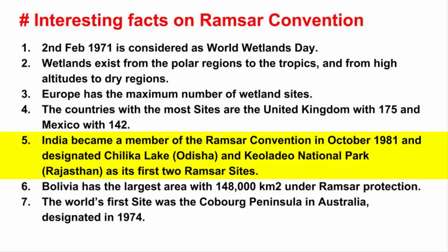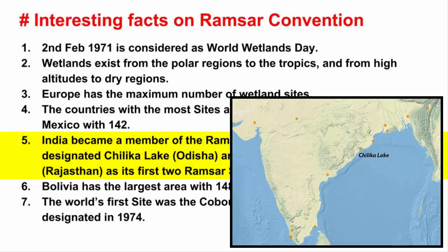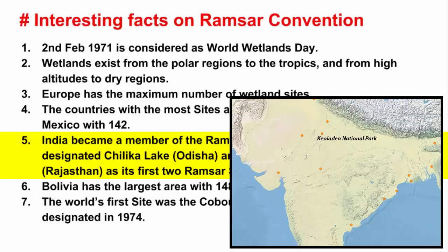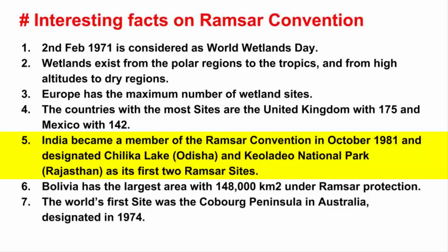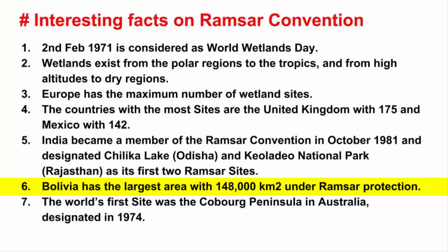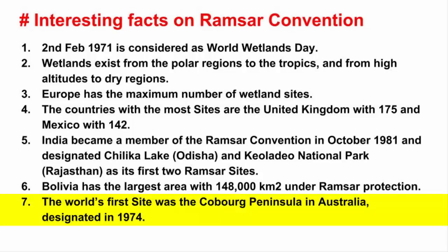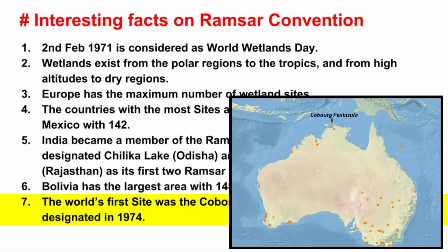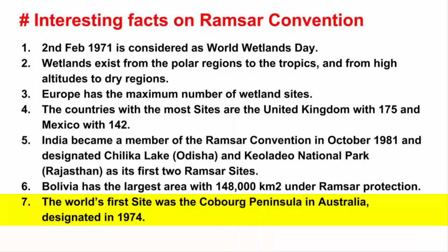India became a member of the Ramsar Convention in October 1981 and designated Chilika Lake in Odisha and Keoladeo National Park in Rajasthan as its first two Ramsar sites. Bolivia has the largest area with 1,48,000 km² under Ramsar protection. The world's first Ramsar site was the Cobourg Peninsula in Australia, designated in 1974.